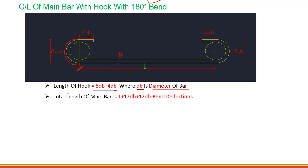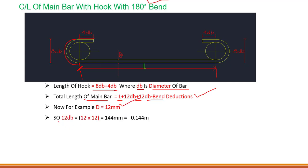The total length formula will be equal to the clear length plus two hooks — 12dB plus 12dB — and then we subtract the bend deductions for the 180 degree hooks. For example, with a diameter of bar as 12mm, the hook length will be 12 into 12 equals 144mm.